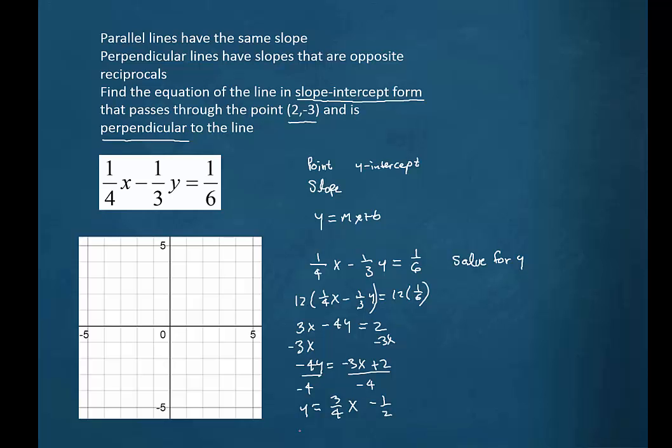And we'll wind up with y equals three fourths x minus one half. With a problem like this, it can be pretty handy to graph this line so we can get a visual of what we're working with.